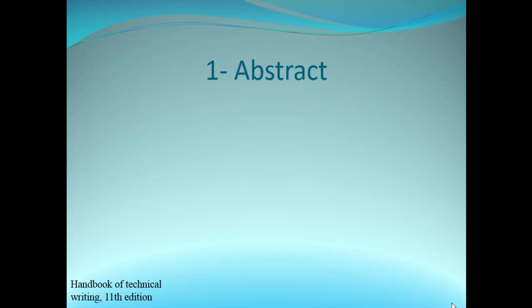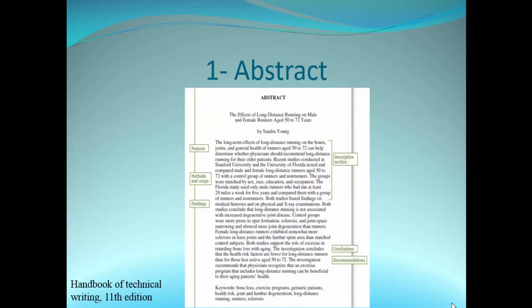The abstract of any research paper must include: the purpose in the first line, a descriptive section of the work covering methods and scope, some findings and results with numbers, and conclusions and recommendations. Then you write the keywords, which should describe your paper concisely and to the point.